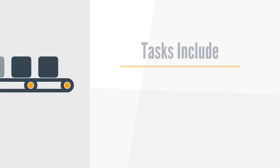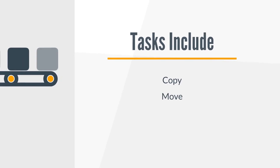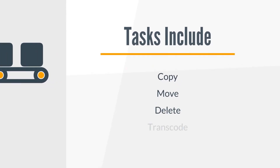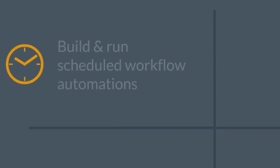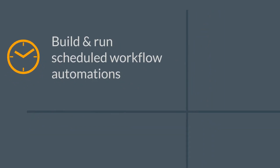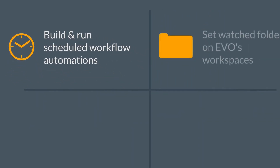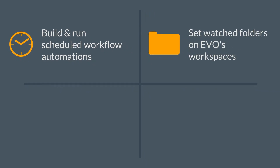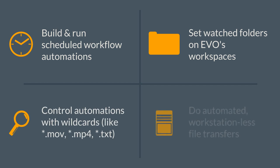Slingshot offers configurable tasks that can be put into automations you create, including copying, moving, deleting, transcoding, and emailing. With these tasks, you can build and run scheduled workflow automations, set watched folders on Evo's workspaces, use file queries to control the scope of your automations, and even do automated transfers that don't require a workstation.